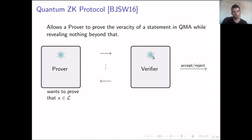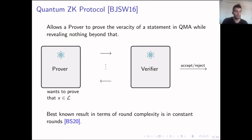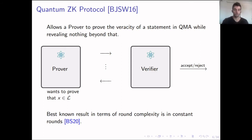In quantum zero knowledge, we have quantum statements, so X is quantum, the proof and the verifier can also be quantum, and the messages can also be quantum. In the quantum setting, the best existing results for round complexity are in constant rounds, introduced in 2020 by Butaski and Smalley. What we wondered is whether QMA statements inherently introduce additional rounds of interaction.